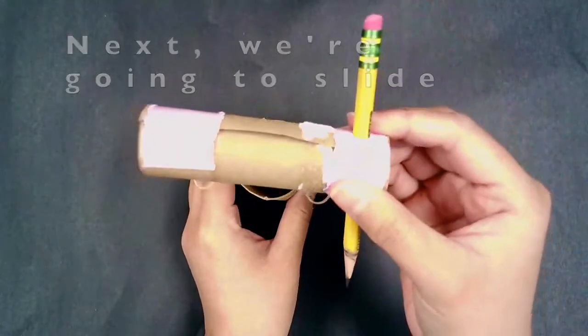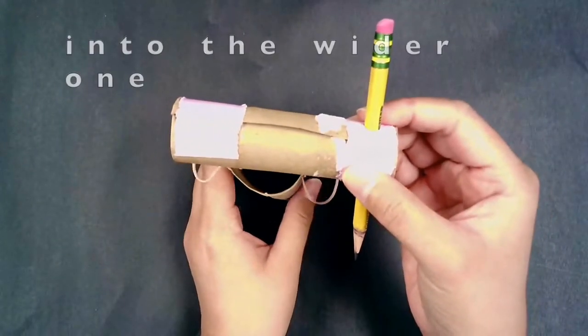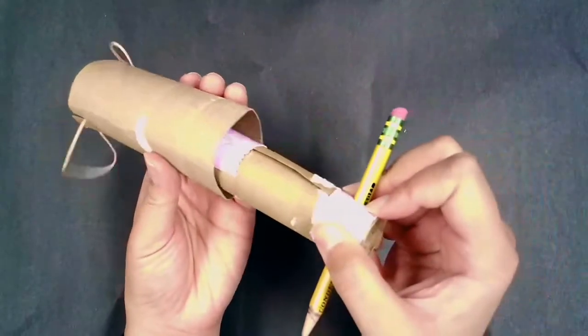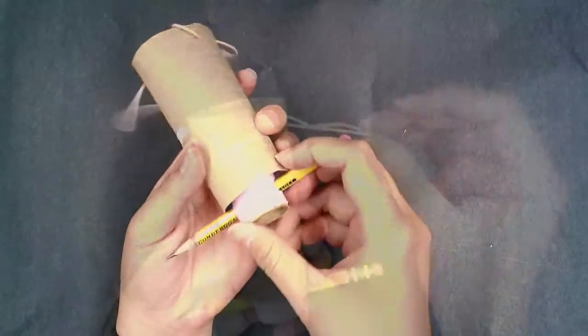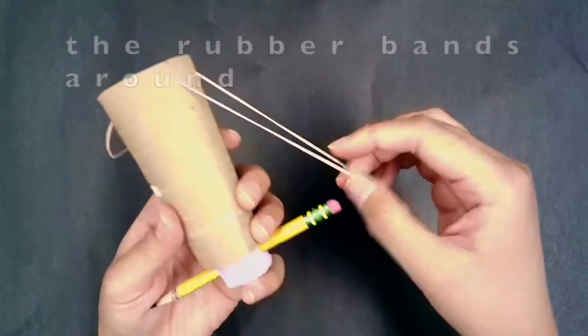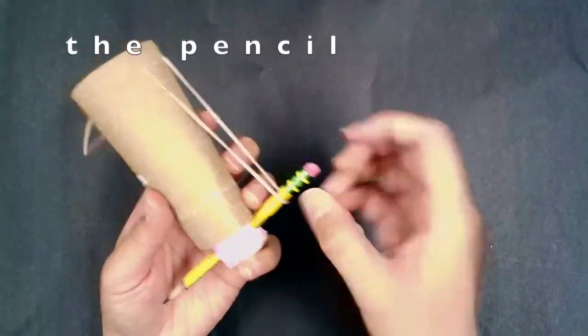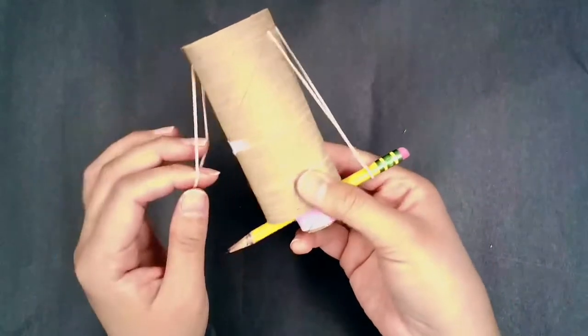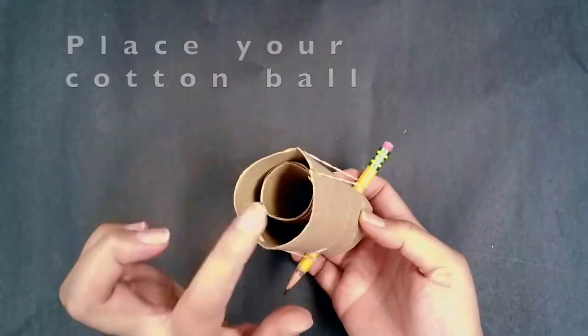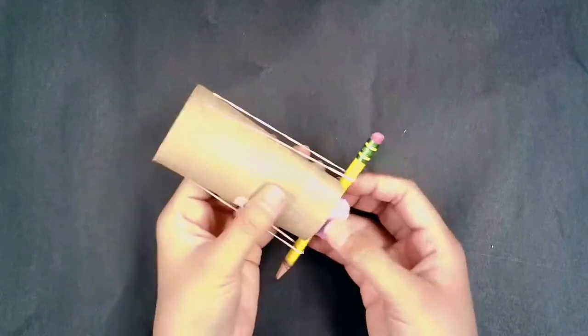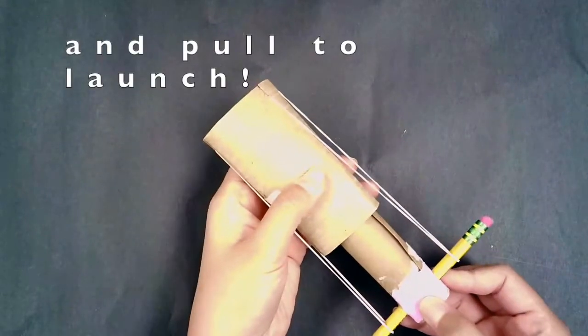Next, we're going to slide the narrow tube with the pencil into the wider one. Then you're going to wrap the rubber bands around the pencil. Place your cotton ball on the opposite end and pull to launch.